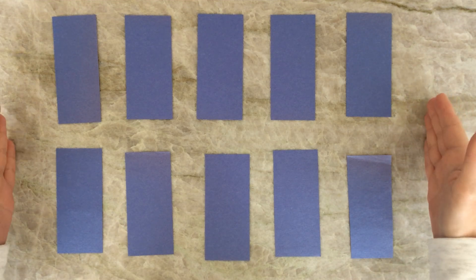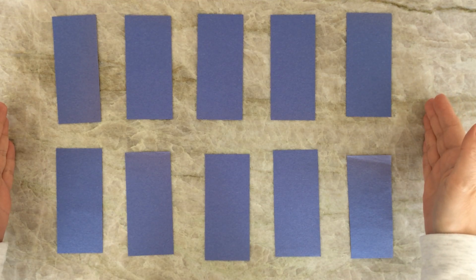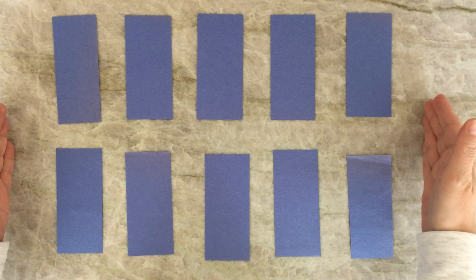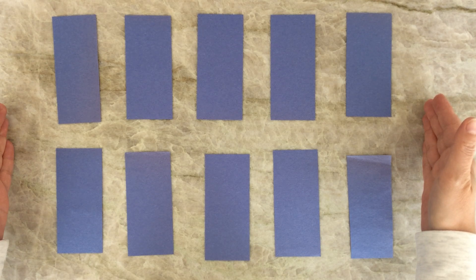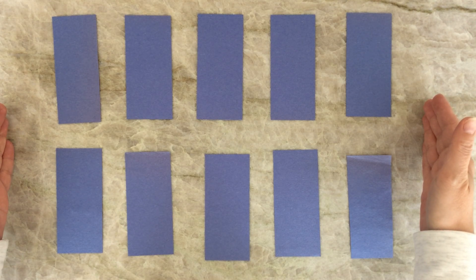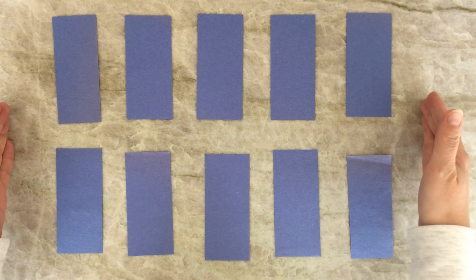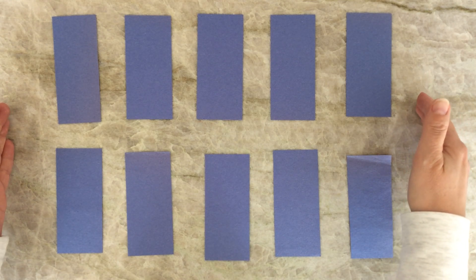I made 10 cards with the numbers from 1 to 5. Some cards have the numeral, which means the number, and some cards have the dots to represent the number. Your job is to find a match. Let's see how to play.